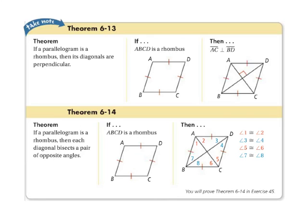The diagonals of rhombuses have special properties. If a parallelogram is a rhombus, then the diagonals are perpendicular — segment AC is perpendicular to segment BD. Also, if a parallelogram is a rhombus, then each diagonal bisects a pair of opposite angles. Segment AC makes angles 1 and 2 that are congruent to angles 5 and 6, and segment BD bisects the angles so that angles 3 and 4 are congruent to angles 7 and 8.